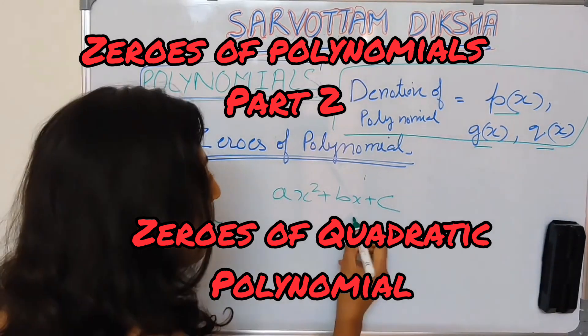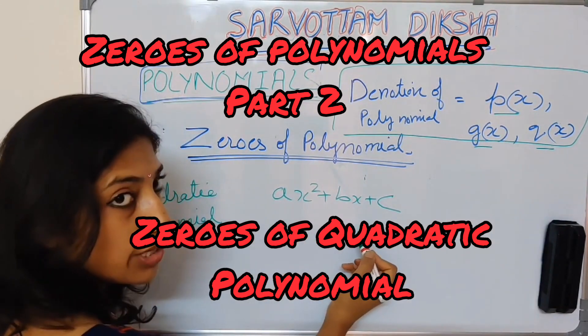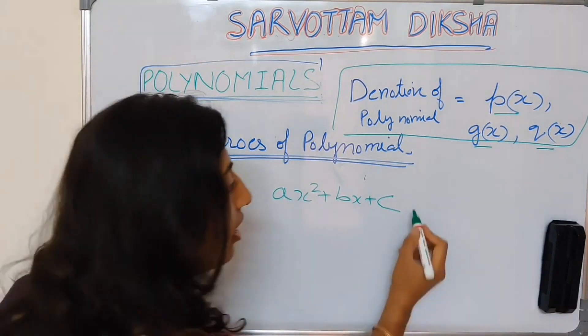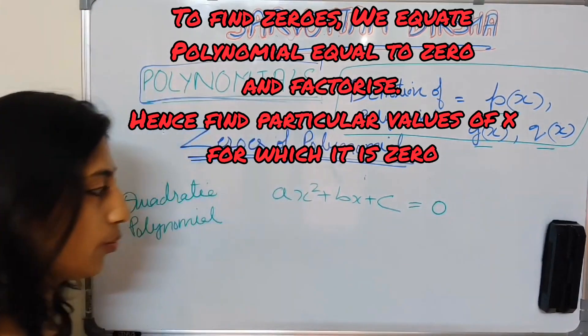Ax square plus bx plus c. This is standard expression of quadratic polynomial. Now let me equate it equal to 0.